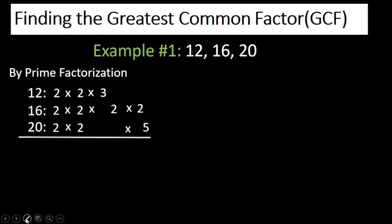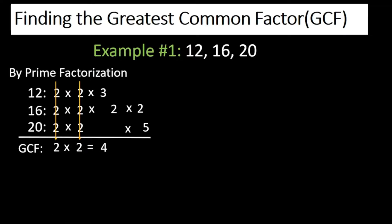If you observe, the prime factors common to 12, 16, and 20 are two 2s. So you multiply 2 times 2 and that gives you 4. Therefore the greatest common factor of 12, 16, and 20 is 4.